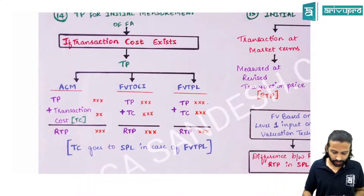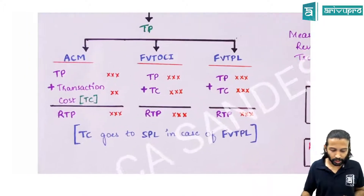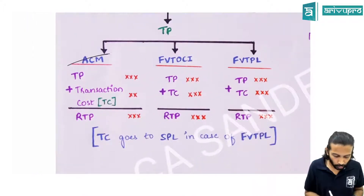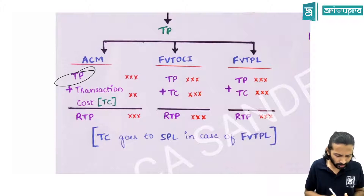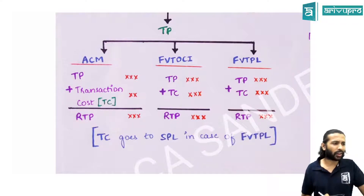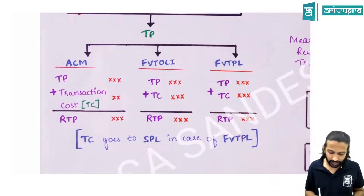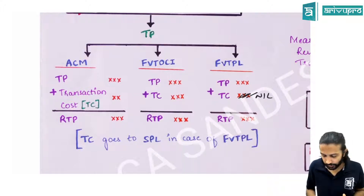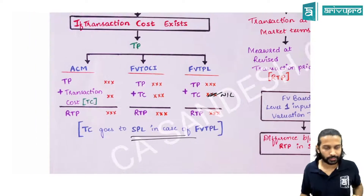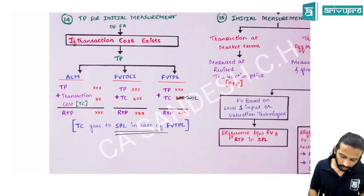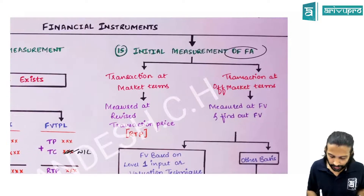Transaction costs: for ACM or FVTOCI methods, transaction costs are added to the initial measurement. This changes the transaction price to a 'revised transaction price' (RTP). For FVTPL, transaction costs are not added — they go directly to the statement of P&L.